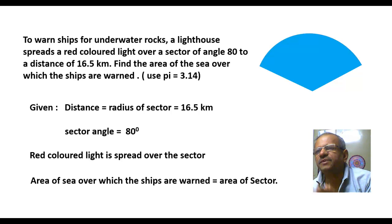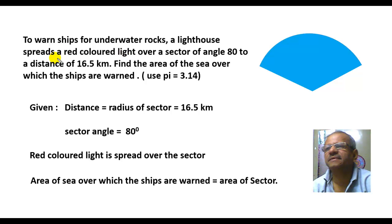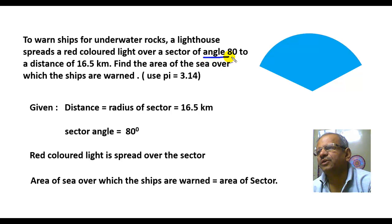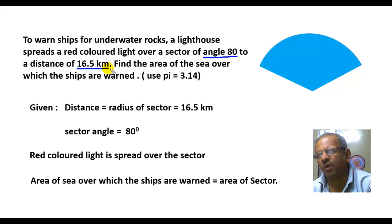Welcome to mensuration part 6. Here are a few more questions from mensuration. The first question: to warn ships of underwater rocks, a lighthouse spreads a red colored light over a sector of angle 80 degrees to a distance of 16.5 kilometers. Find the area of the sea over which the ships are warned. Use pi equal to 3.14.